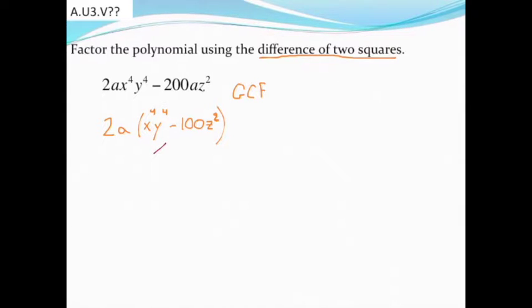So the way this will factor then into difference of two squares, I like to do those little marks to kind of show what I'm splitting this into. If I take the square root of x to the fourth, y to the fourth, like I said it's kind of like dividing that exponent by 2. So I'd be left with x squared, y squared. And then if I take the square root of 100z squared, I'd be left with 10z.